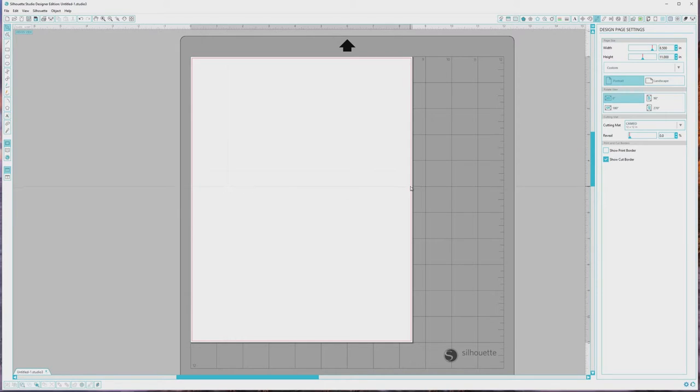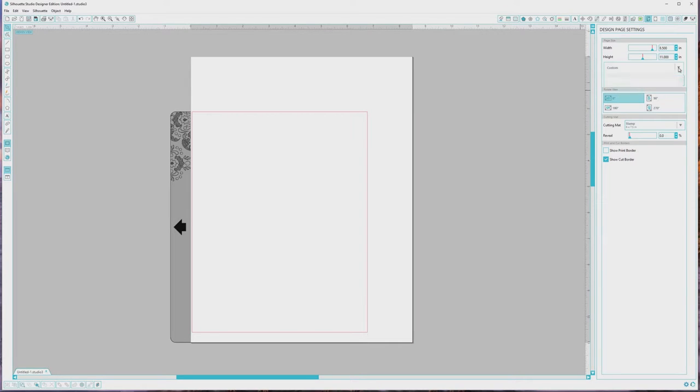I do have to change the mat and paper size settings by opening up the design page settings window from the top right menu and changing the mat type from Cameo which is the machine that I'm using to stamp for the stamping mat. After that I need to go up to the page size area and choose stamp from the drop down box to change it to the correct size for the stamp material.